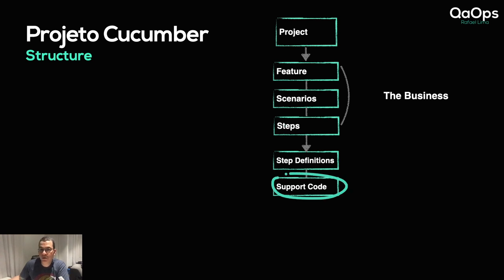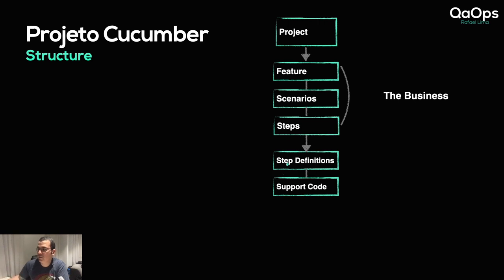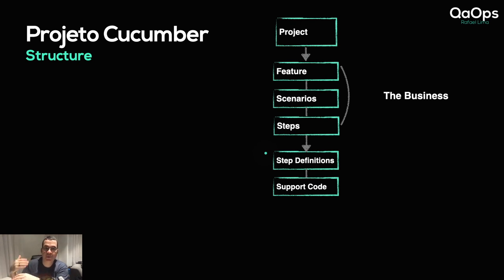We're going to have some support code. This is any code that we need in order to do whatever we need to do — for instance, connect to the database, create our page objects, or set up our API structure. Those are all supporting code because I don't want to put all the implementation into my step definitions. I want to do an abstraction — the same as in JUnit, where I don't dump all my code into the test method itself.